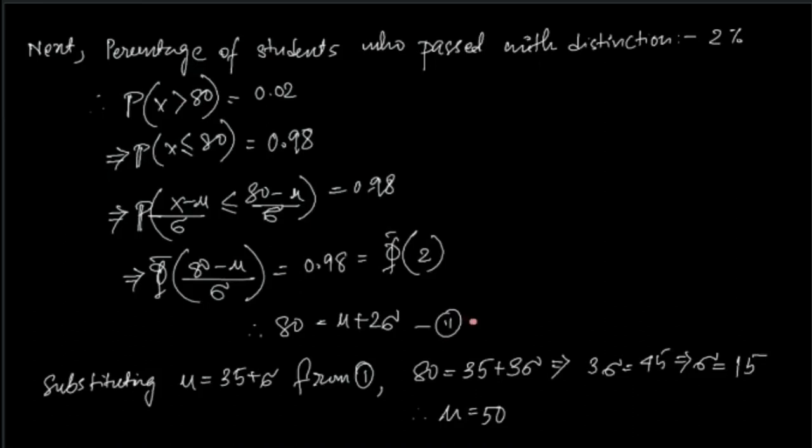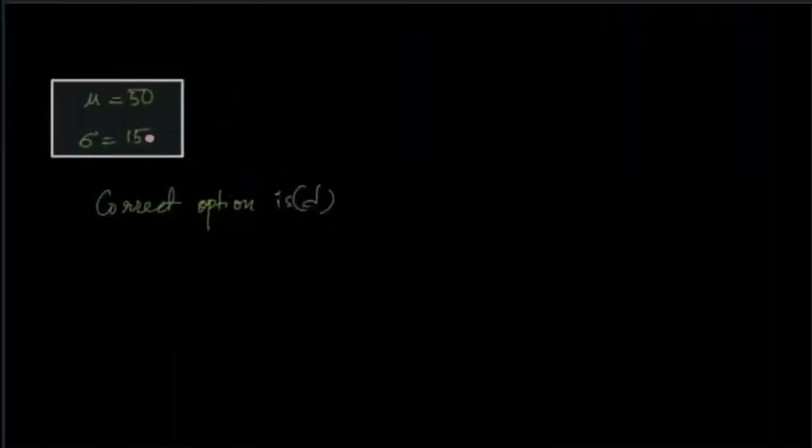We have two equations, two linear equations in two variables, and we can solve them in any manner we want. What I did was substitute μ from the first equation into the second equation and solve both. We have μ = 50 and σ = 15.